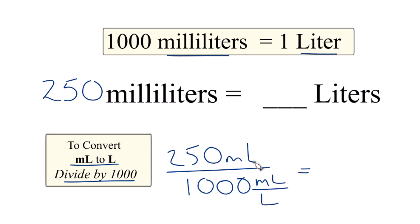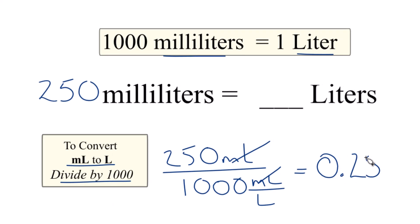Now, when we divide, we have milliliters on the top and the bottom. They cancel out. We're just dividing 250 by 1,000. That gives us 0.25 liters.